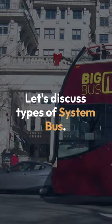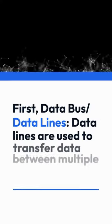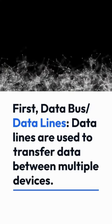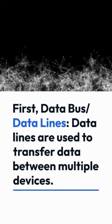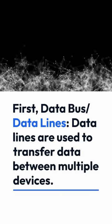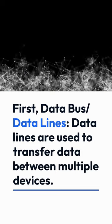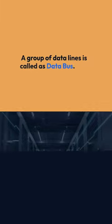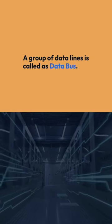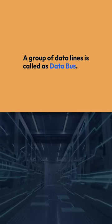Let's discuss types of system bus. First, data bus — data lines. Data lines are used to transfer data between multiple devices. A group of data lines is called a data bus.